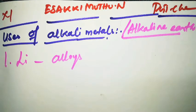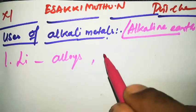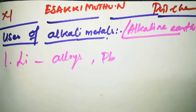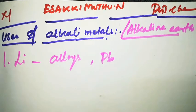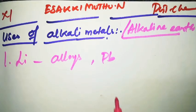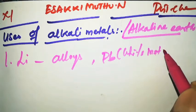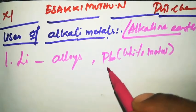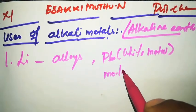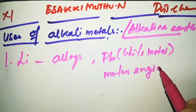Lead is one of the white metals, with symbol Pb. Lead is used for the manufacturing of motor engines. It is also known by the name white metal and is used in motor engine manufacturing.